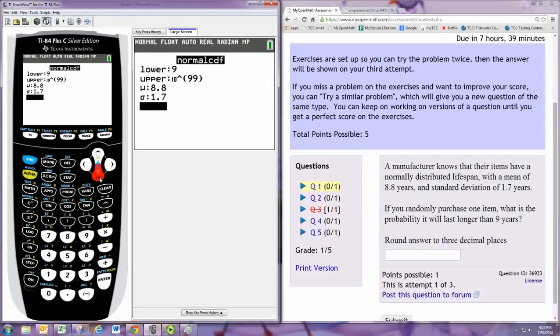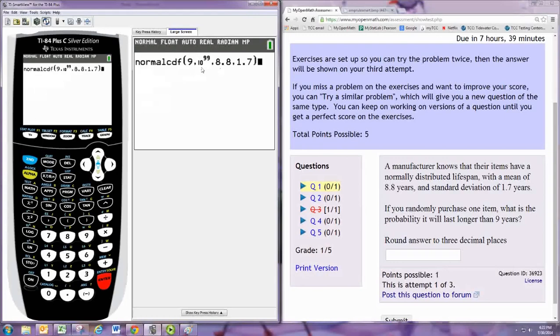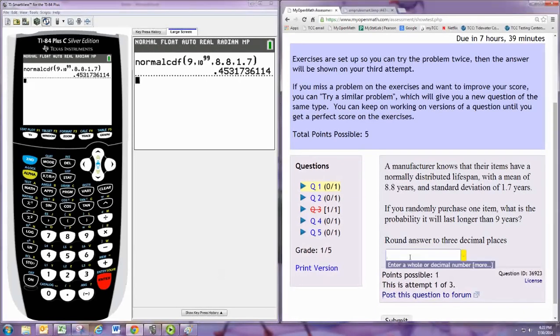Now if you don't have one of the newer TI's, you might have to put all this stuff in in the following format: left bound comma right bound comma mean comma standard deviation. You'll get, of course, the same result. To three decimal places is 0.453.